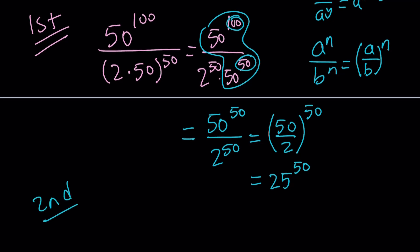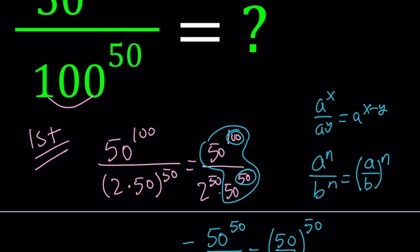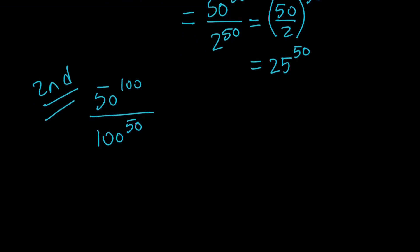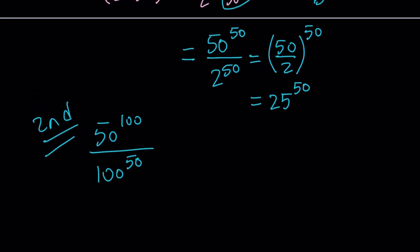Let's go ahead and take a look at another way to solve this problem. We have 50 to the power 100 divided by 100 to the power 50. Notice that with the first method, we broke down the base. How about breaking down the exponent in the numerator?